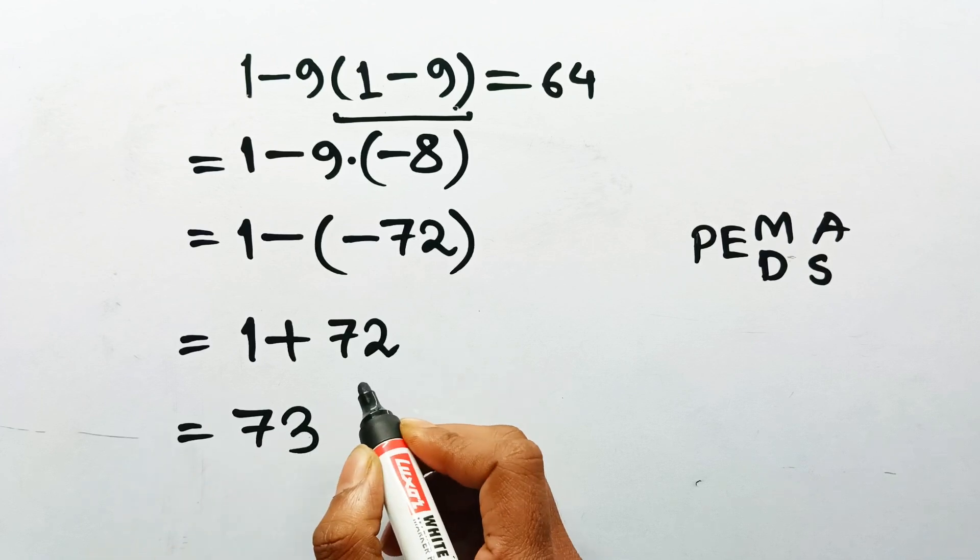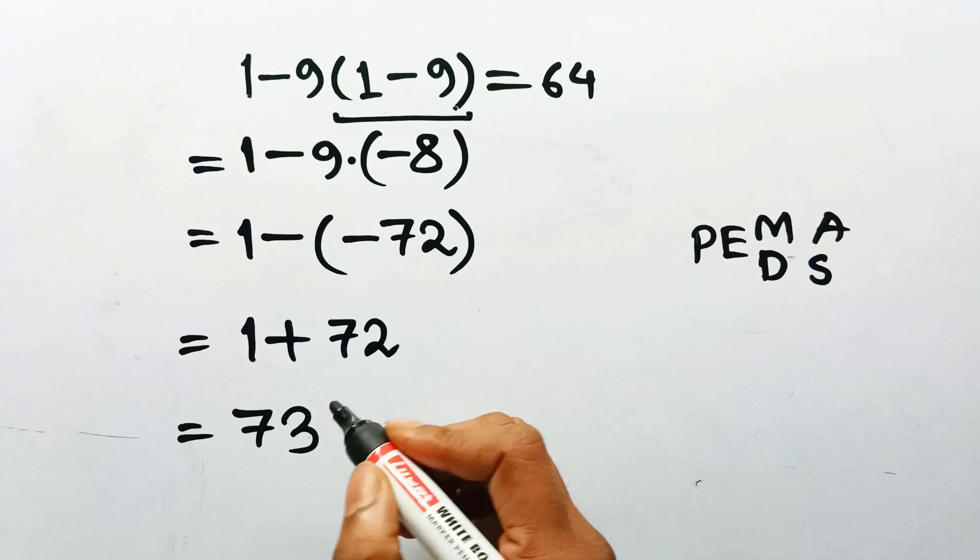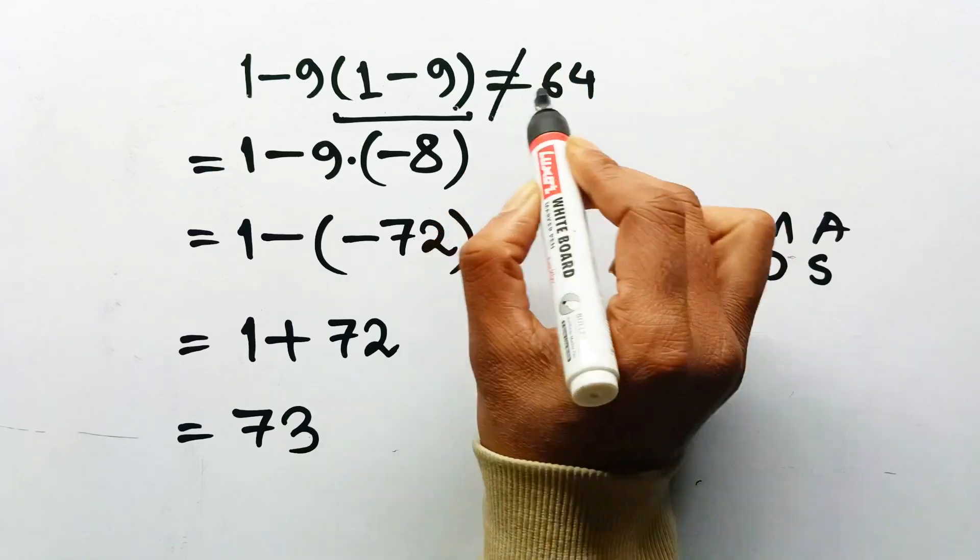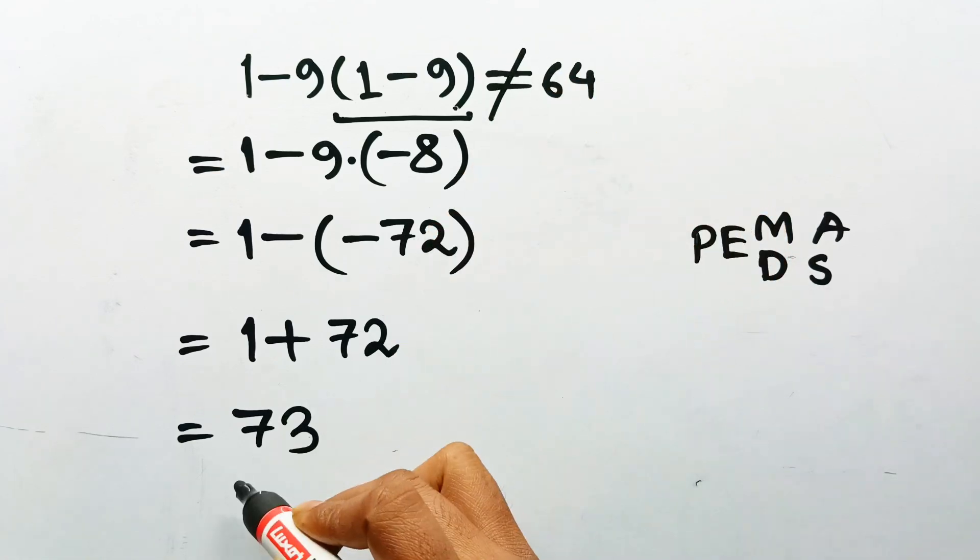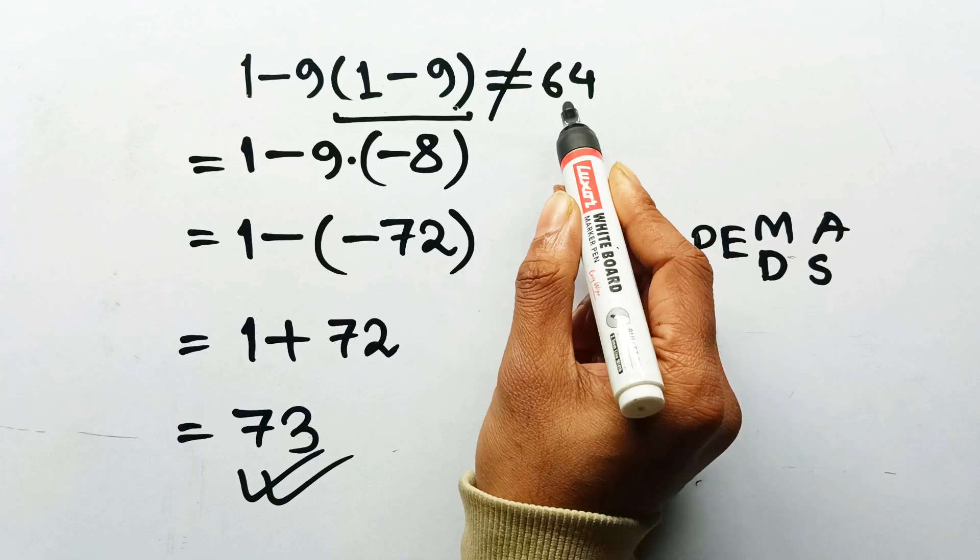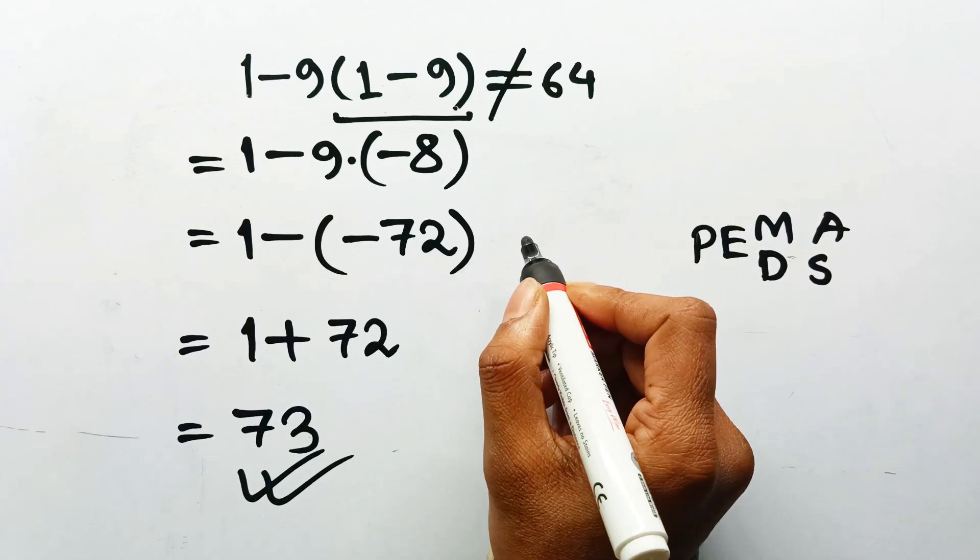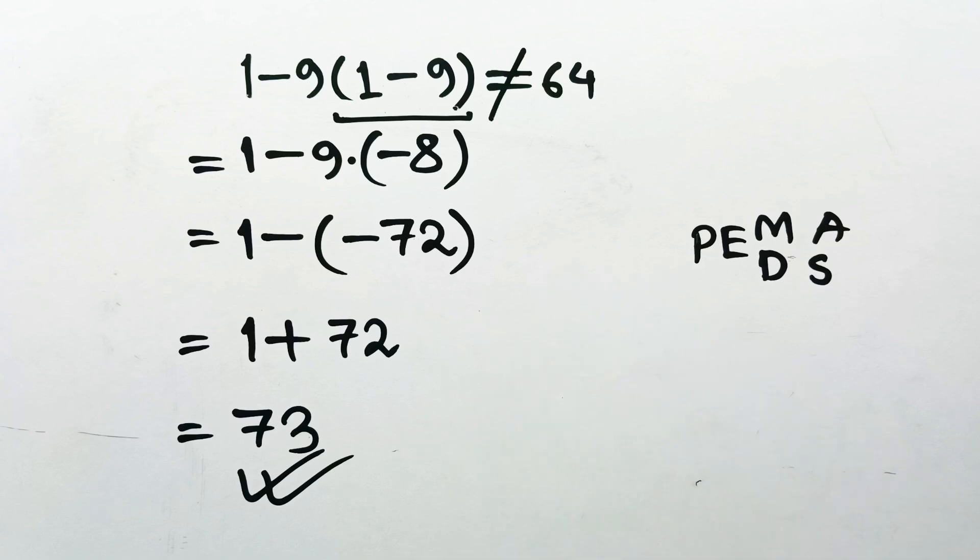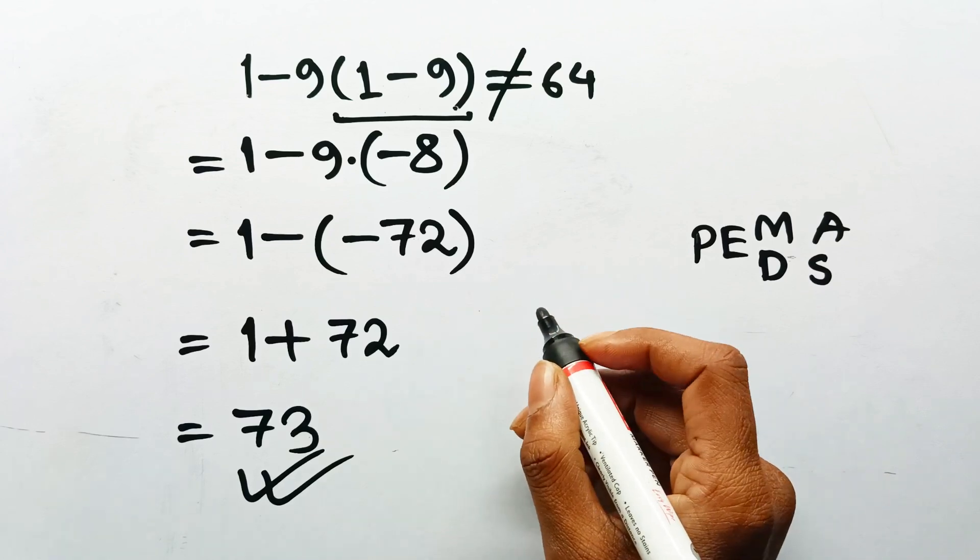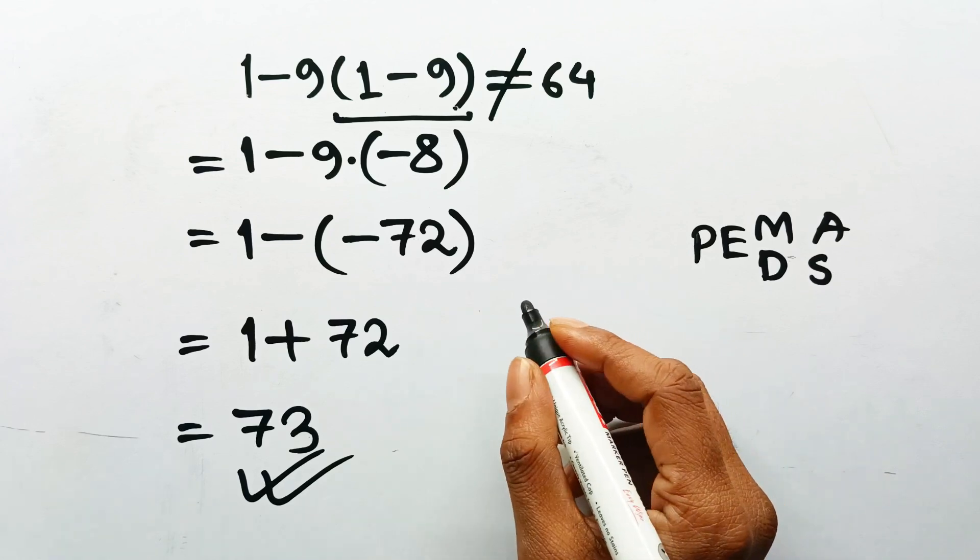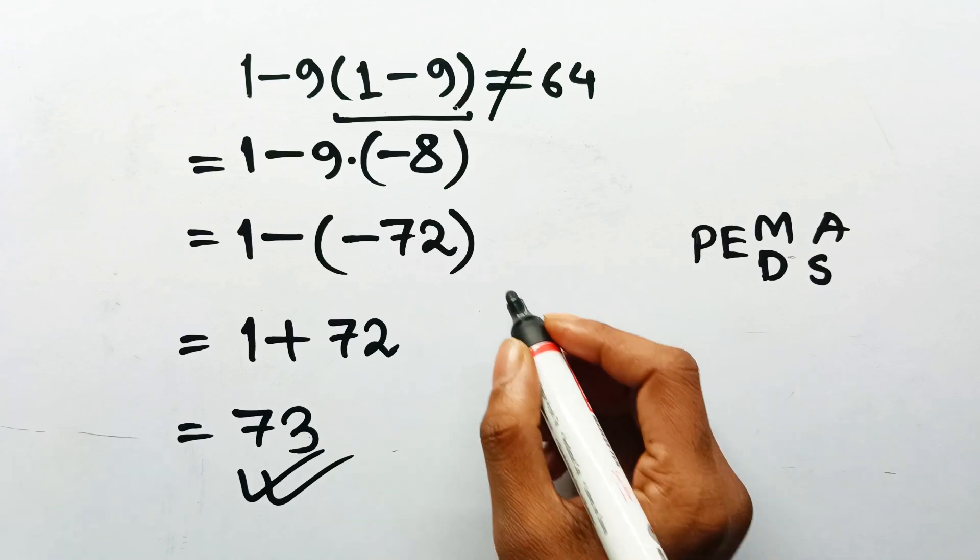Not 64. Not even close. 64 was just math wishful thinking. So, the correct answer is 73, not 64. And yeah, I know, it hurts a little. But that's how these problems get you. They rely on confidence, not correctness. If your answer's different, let's compare. Write it in the comments.